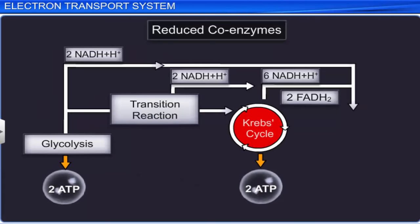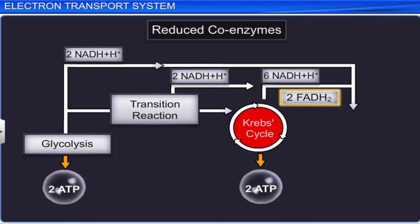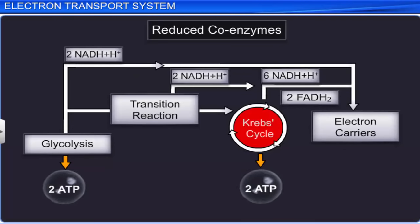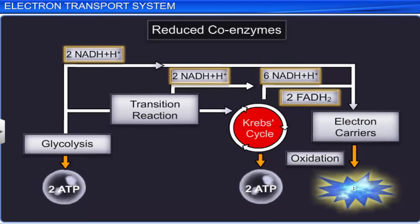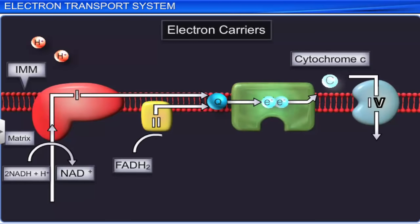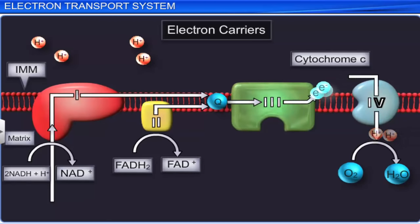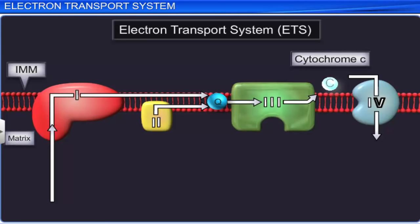Glycolysis and the Krebs cycle together result in the formation of reduced coenzymes such as ten molecules of NADH+ H+ ions, two molecules of FADH2, and four molecules of ATP. These reduced coenzymes need to be oxidized to release and utilize the energy stored in them. This is made possible by the transport of protons and electrons from these coenzymes to oxygen through electron carriers present in the inner mitochondrial membrane. This metabolic pathway of electron transport is called the electron transport system or ETS.